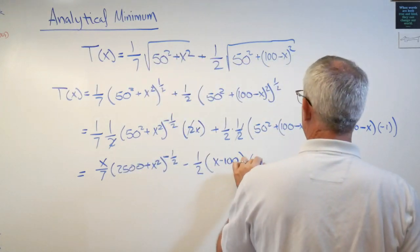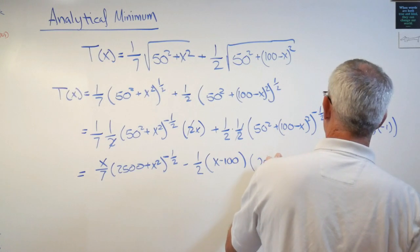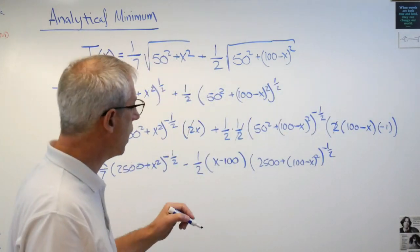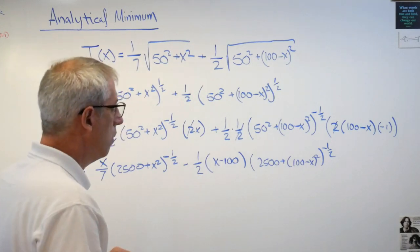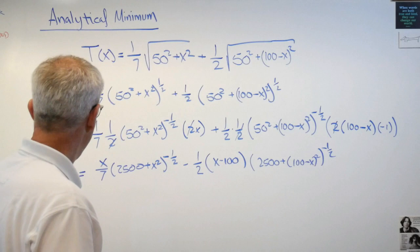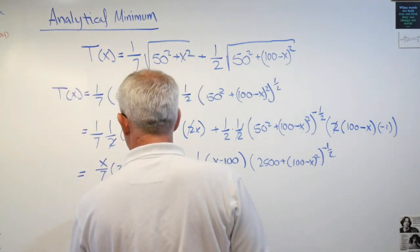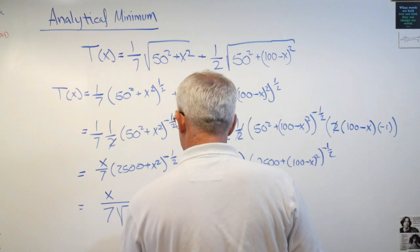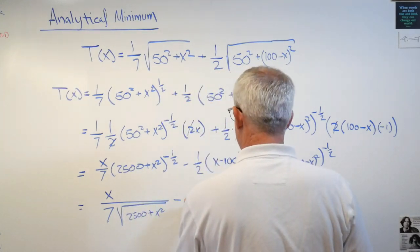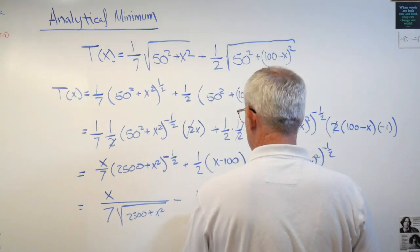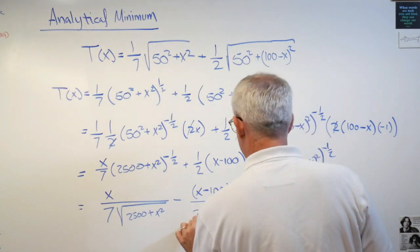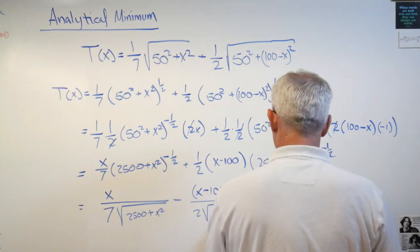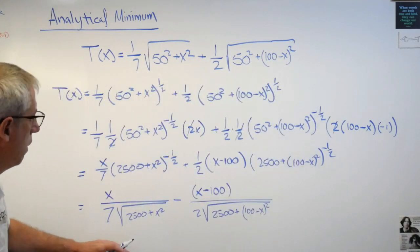So there's that. I'm going to bring that and multiply that through. So I've got it, but I've got it in kind of a clunky form. Let's clean this up once more. Can you guys see that okay? Last step here. I'm going to say x over seven square root of this minus x minus 100. I'm sorry, that's a plus now. 100 over two square root of 2500 plus one. There you go. That's the derivative of that function.